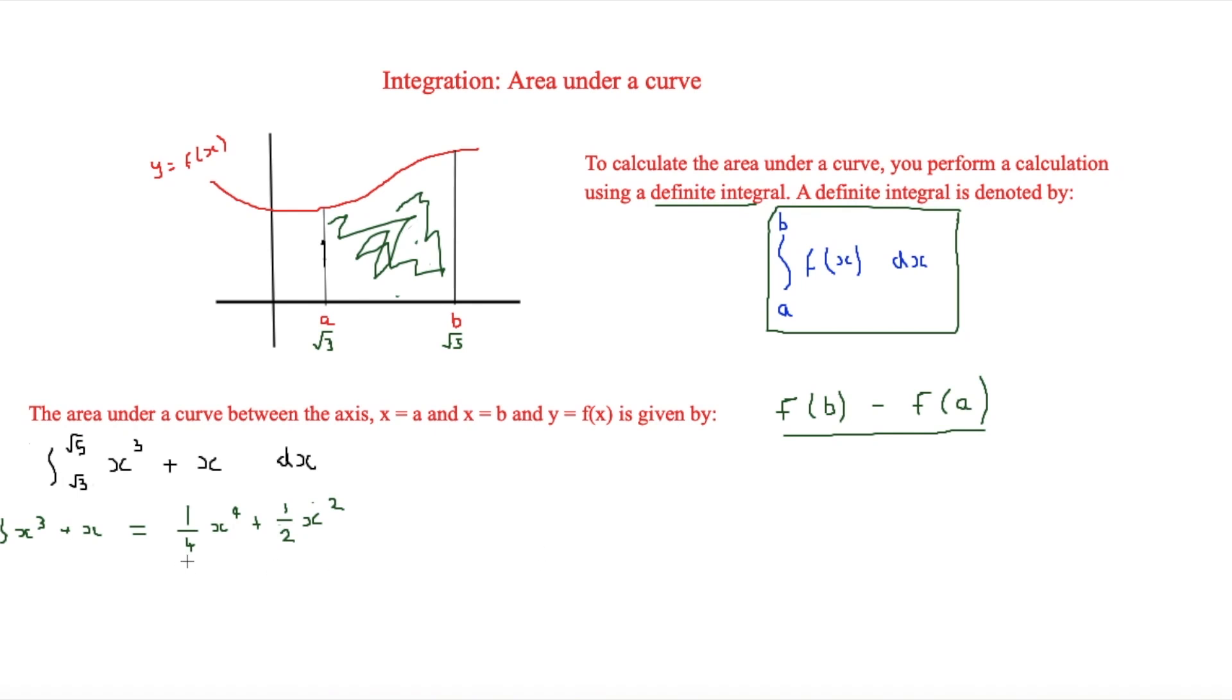So if we sub in b first of all, and if we sub that's root 5, then what we're going to get is 25 over 4. And that's the quarter x to the 4, if you sub in root 5 there. And if you sub in root 5 to half x squared, you're going to be adding 5 over 2.